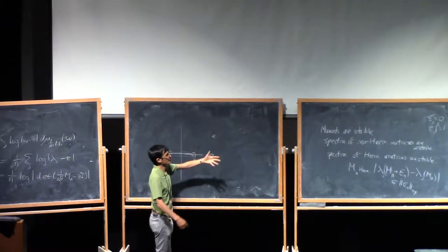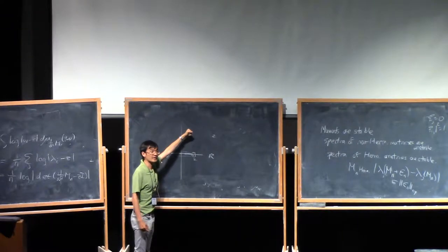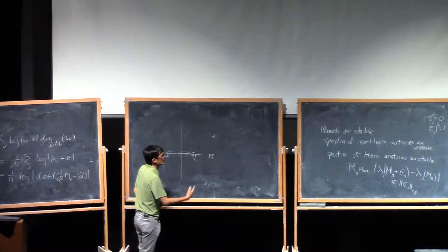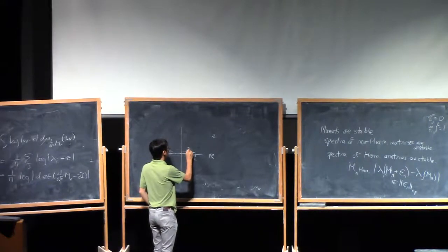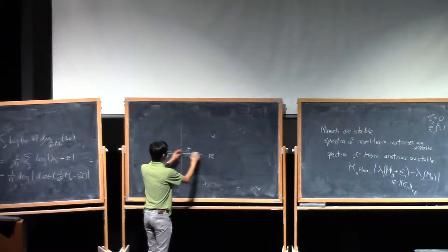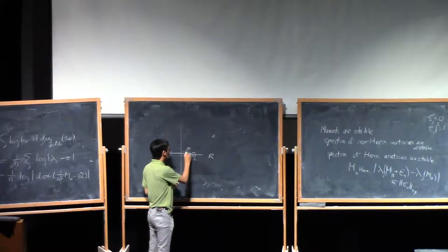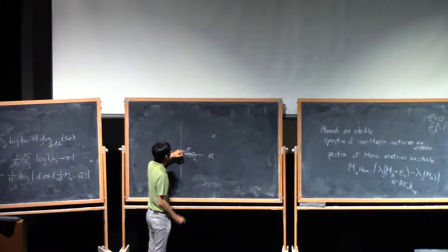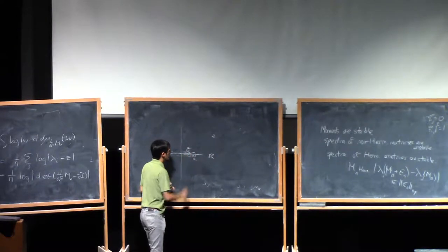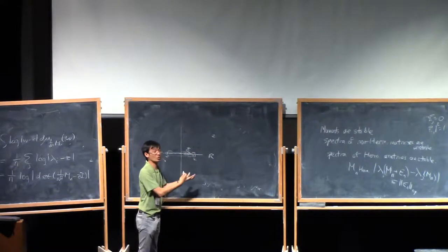The closer Z gets to the real axis, the harder it gets to understand this transform, but for Z far away from the real axis, it's fairly easy. The Stieltjes transform is also fairly localized. So if Z is over here, one over W minus Z is large here and small here. So what the Stieltjes transform is doing is trying to look at a local portion of the spectrum. Evaluating the Stieltjes transform at a point tells you a fair bit about what the spectrum is doing in that region. This is why the Stieltjes transform is so good for proving local laws.